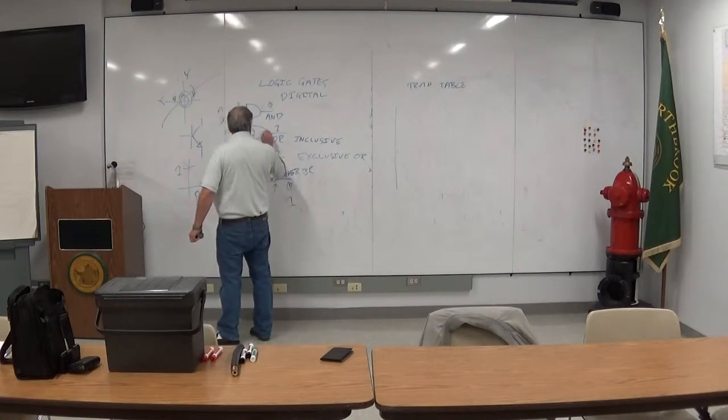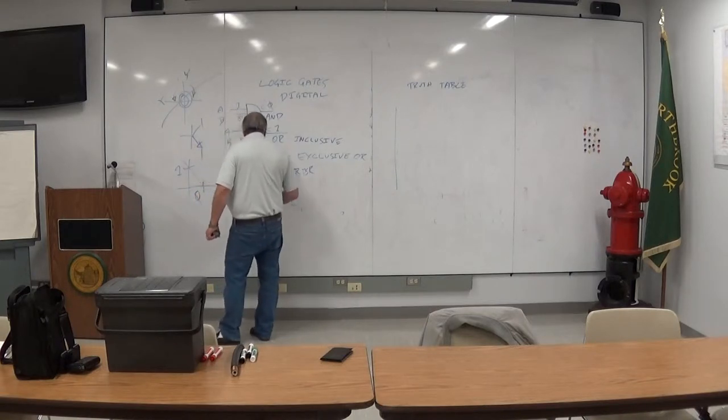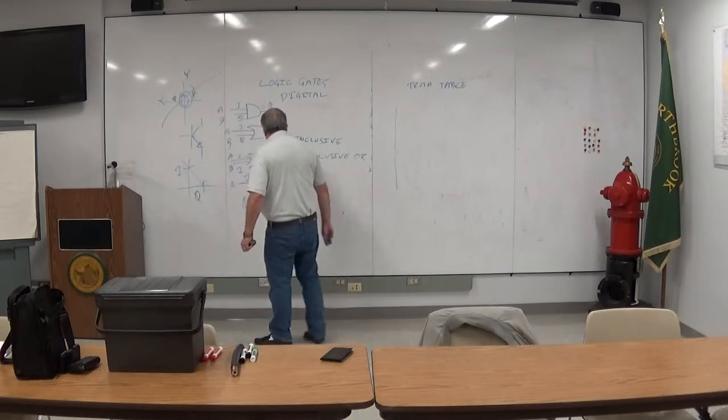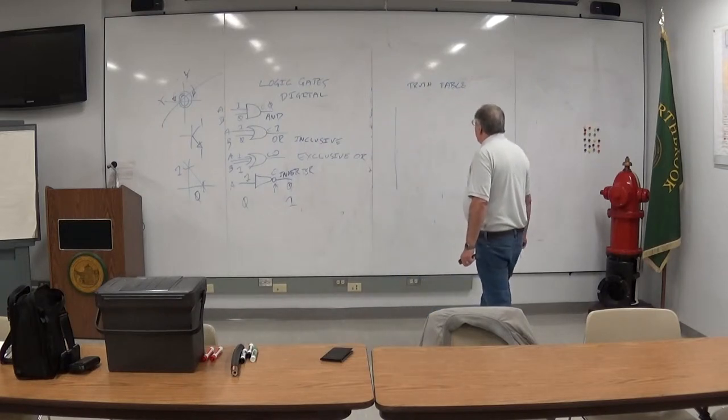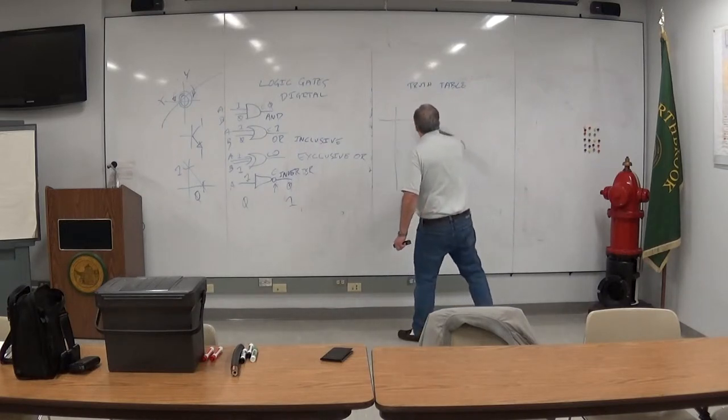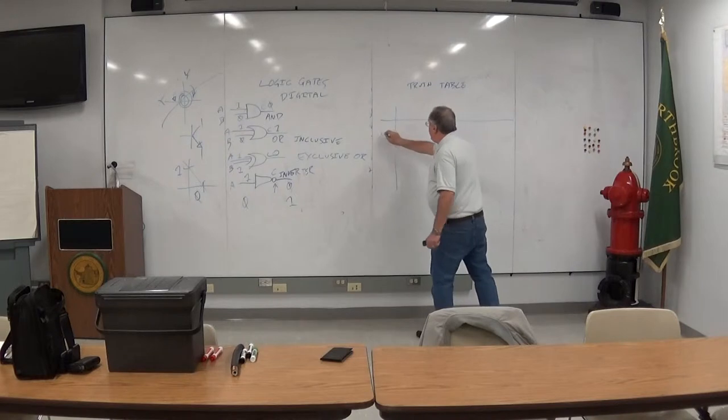So we're going to call the input of this guy A and B and the output C. A, B, C. A, B, C. This only has an A. The output we'll call C anyway. And let's map out all the possibilities here.